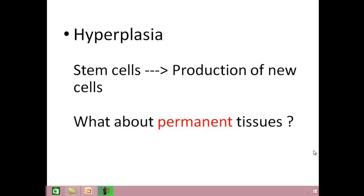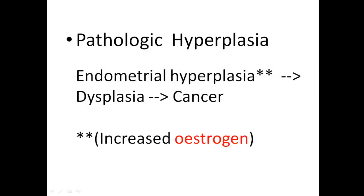The next thing is pathological hyperplasia. Endometrial hyperplasia is one example of pathological hyperplasia. Why is it pathologic? Because this is a hormone-mediated process. Increased estrogen levels lead to endometrial hyperplasia, which eventually can lead to dysplasia and cancer. One thing which is important here to be noted...